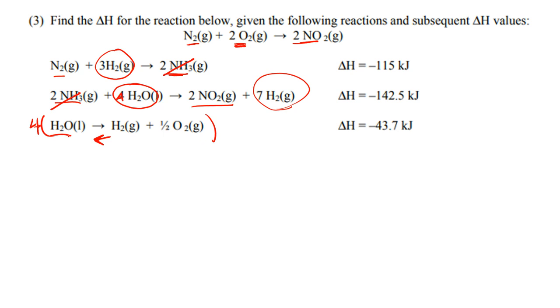So these four waters are now in the product, which means that they're going to cancel out the four waters that are here. These four hydrogens that are in the reactants and these three hydrogens that are also in the reactants are going to cancel out these seven hydrogens in the products.